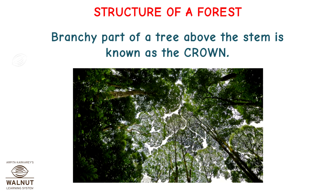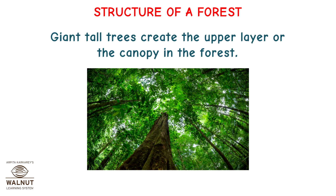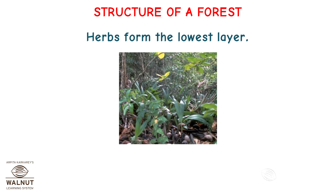The structure of a forest: the branchy part of a tree above the stem is known as the crown. The roof created by the upper branches of tall trees is known as the canopy. Giant tall trees create the upper layer or the canopy in the forest. Shrubs and tall grasses form the next layer, called the understories. Herbs form the lowest layer.